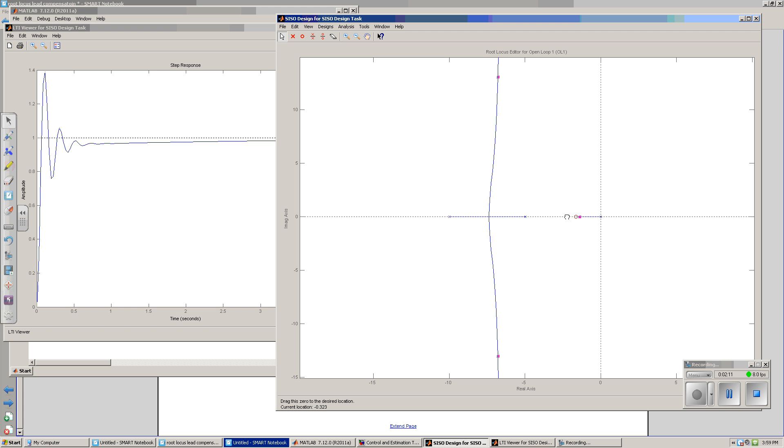So the trick in a lead compensator is speed up the system as much as possible. Which you can see experimentally, means you put the zero right around here. Cancel the slow, stable pole, keeping the pole at the origin there, because that makes it a type 1 system, and I want to keep it type 1.